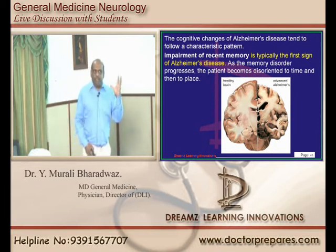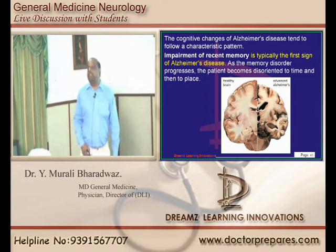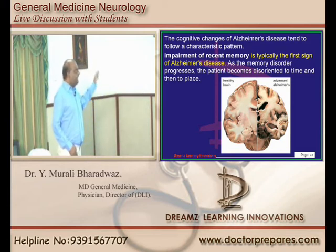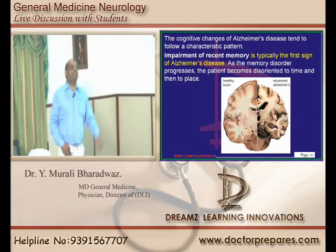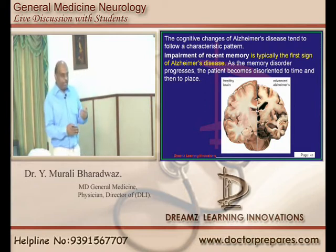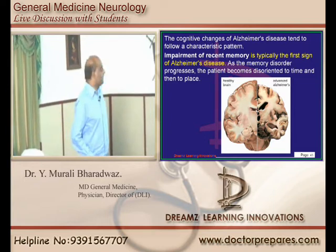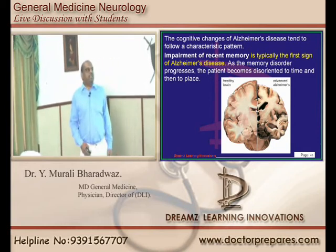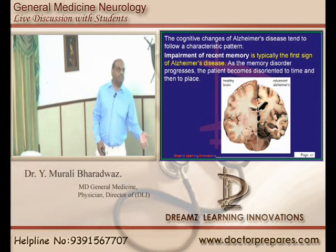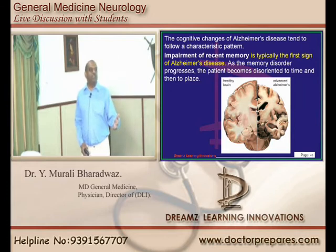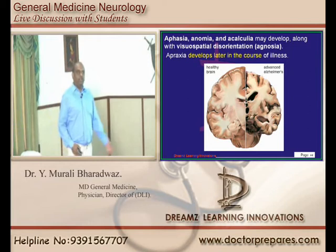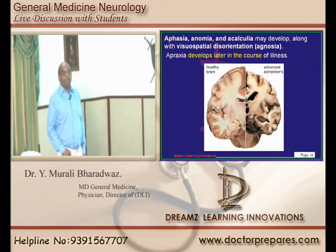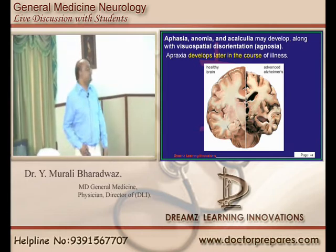The earliest clinical presenting feature in Alzheimer's type of dementia is impairment of recent memory. As the disease progresses, the person becomes disoriented to time and finally disoriented to place. Aphasia, anomia, acalculia — any of them can develop in Alzheimer's. Visuospatial disorientation with agnosia can also develop. Apraxia develops only later in the clinical course — the early feature is always loss of recent memory.